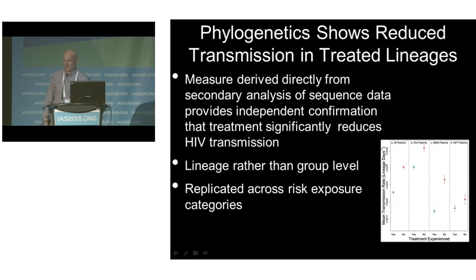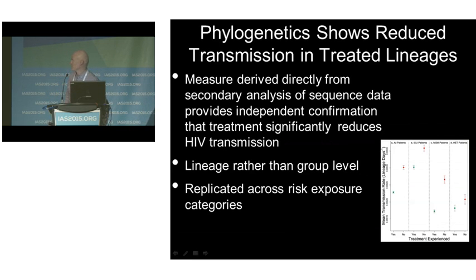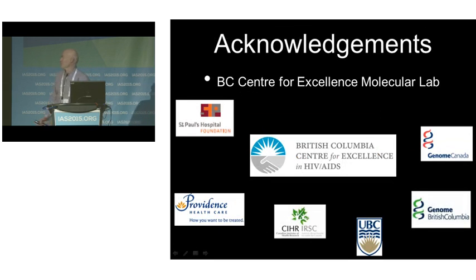In conclusion, this measure is derived directly from secondary analysis of sequence data. It provides independent confirmation that treatment significantly reduces HIV transmission, regardless of patient type or kind of therapy taken. It's a lineage- rather than group-level measure, so it's not driven by aggregation of a particular group, and it is replicated across risk exposure categories. Many people to thank, especially the BC Center for Excellence, the funding sources, and everyone in the BC Center for Excellence Molecular Lab. I'll take any questions.